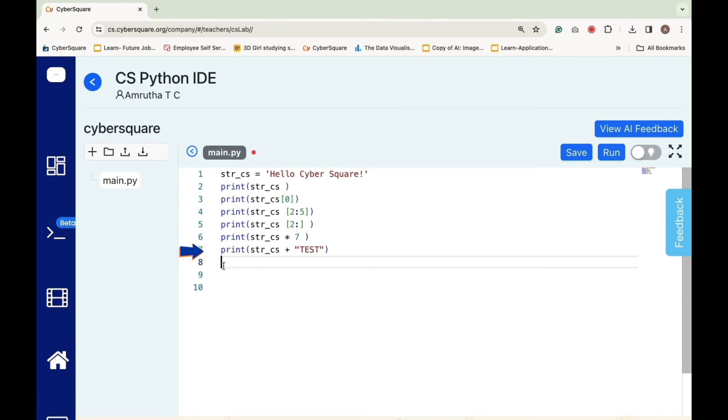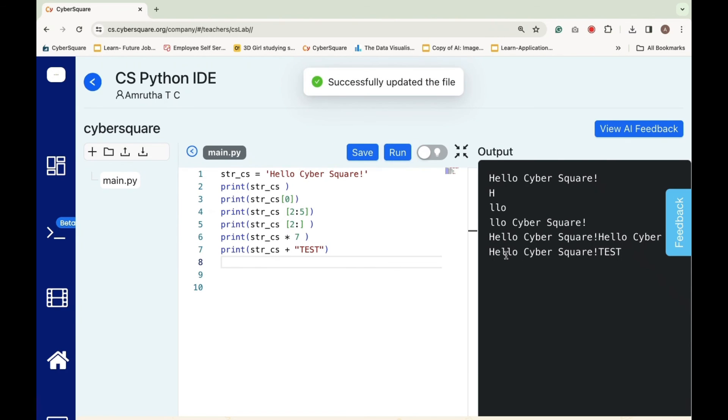istr_cs + 'test' prints the concatenation of the string istr_cs with the string 'test'.